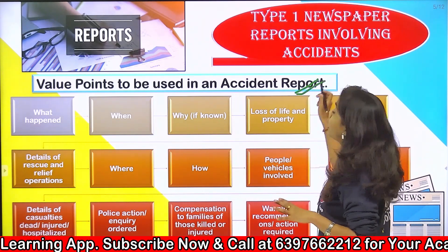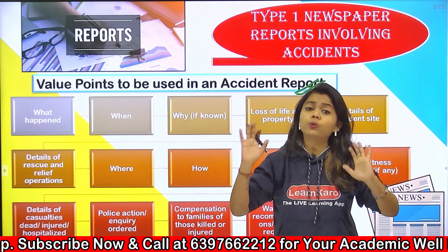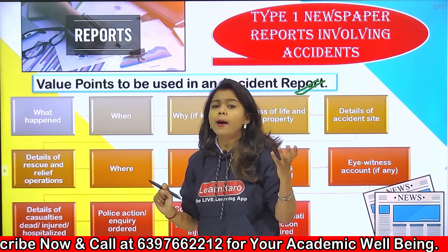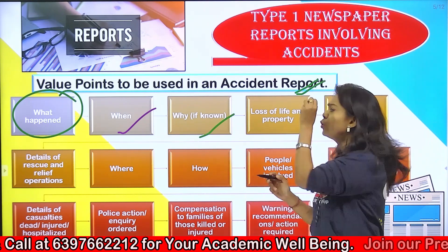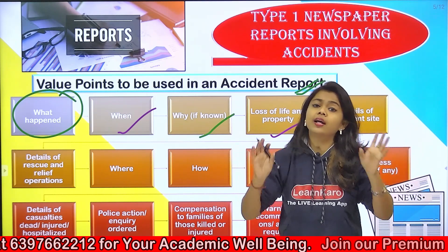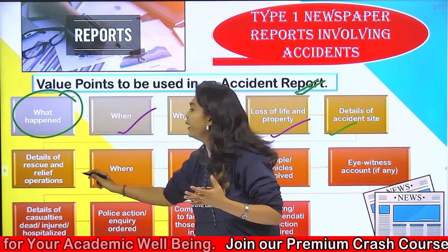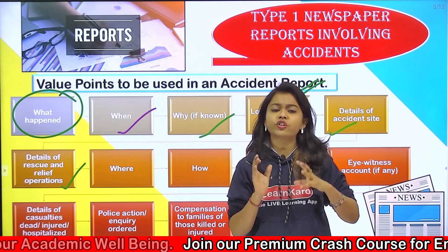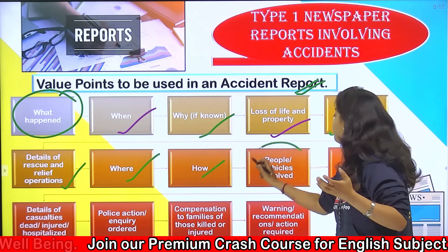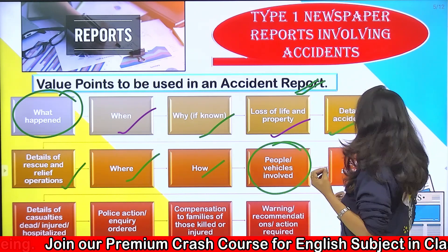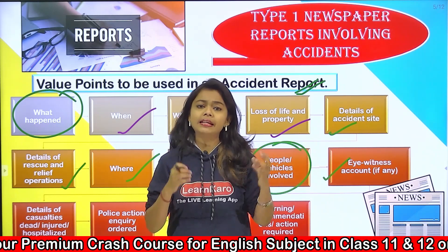Ab value points to be used in accident report — jab aap accident report likh rahe honge, kin kin cheezon ka aapko dhyan rakhna hai. Include: see what happened, when it happened, why — agar aapko pata ho ki kis wajah se koi bhi accident hua hai to aap usse mention kar sakte ho. Koi bhi agar life ya property ko nuksaan hua hai aap usse wahan par mention kar sakte ho. Details of the accident site — exactly accident site kya thi jahan par koi bhi mishap hua. Details of rescue and relief operations — agar koi bhi rescue operation wahan pe hua hai to aap mention kar sakte ho. Where and how woh accident hua hai, and then people or witnesses involved. Agar koi eyewitness account wahan par present hai — wahan ke log jinhon ne accident hote hua dekha ho — unse aap statement lekar yahan par post kar sakte ho.